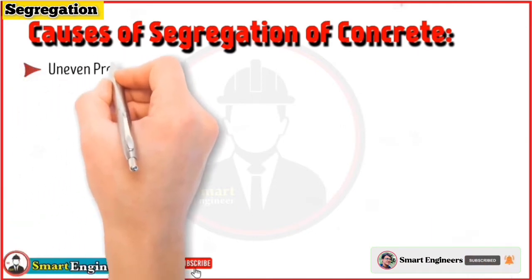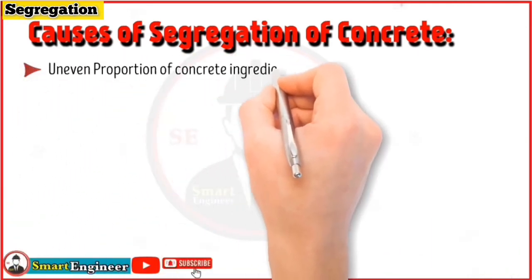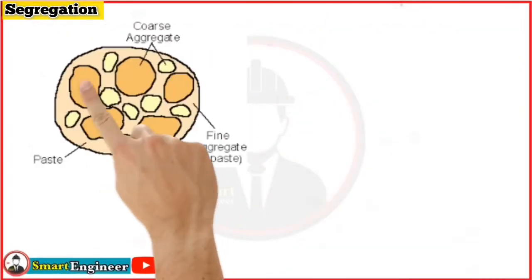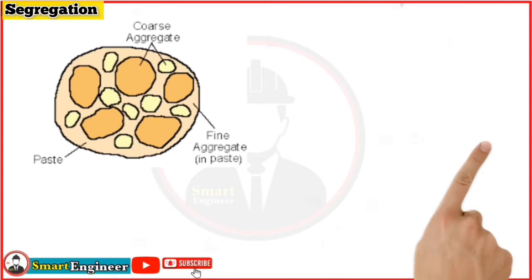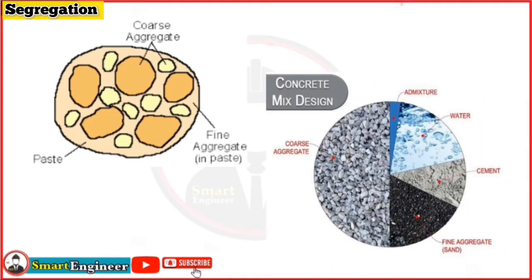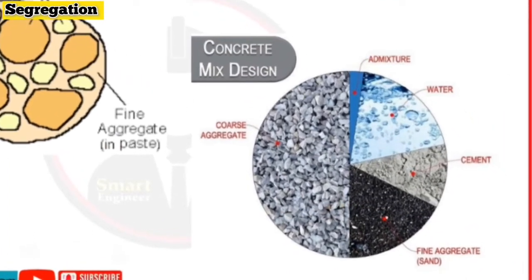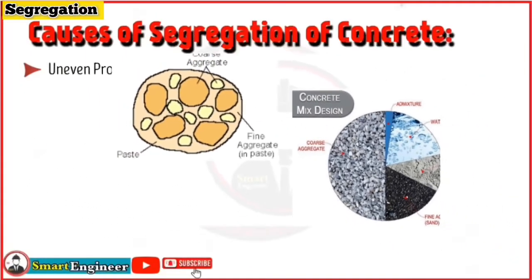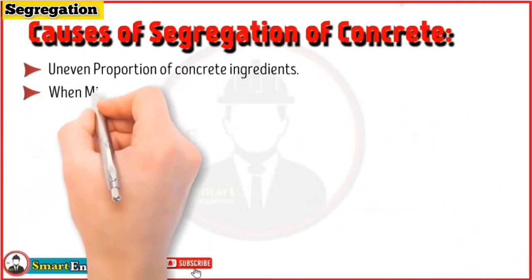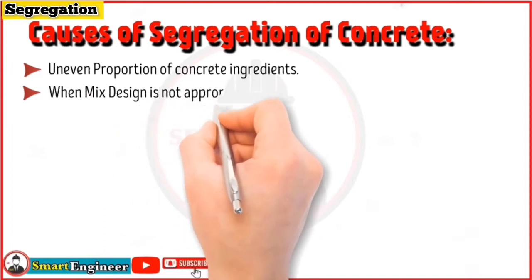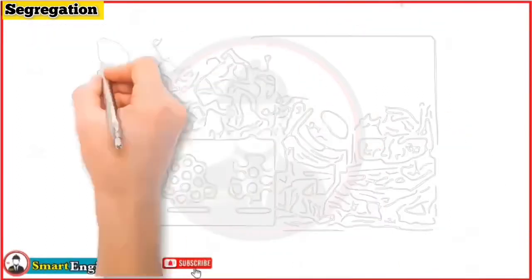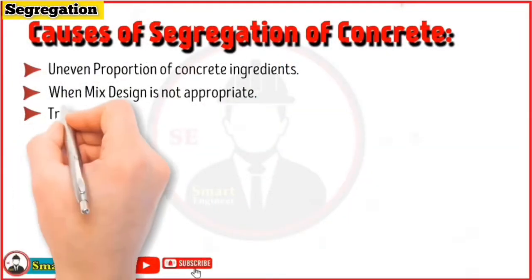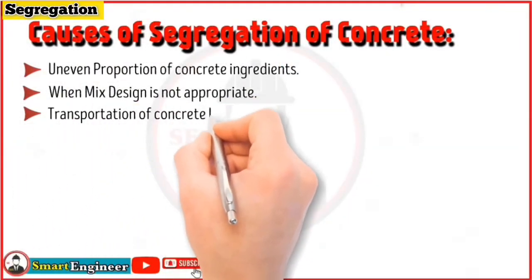Now let's talk about the causes of segregation — why segregation occurs. Normally segregation occurs due to the following: Number one, uneven proportion of concrete ingredients — for example, ingredients not as specified in concrete mix design, generally use of poorly graded aggregates or bad water-cement ratio. Number two, concrete ingredients are not properly mixed — for example, insufficient mixing time.